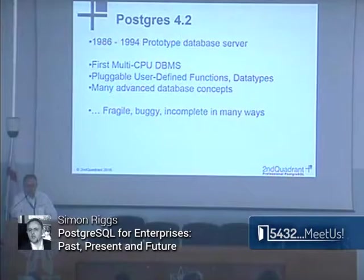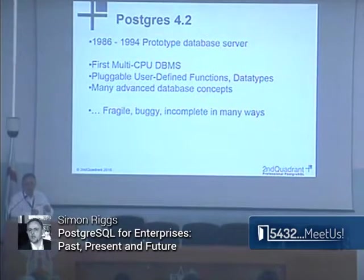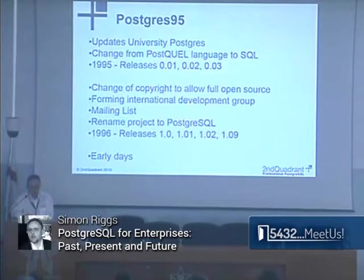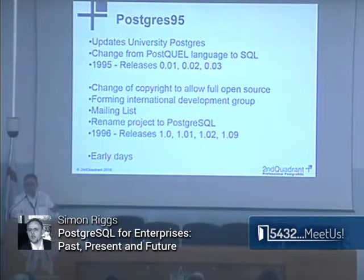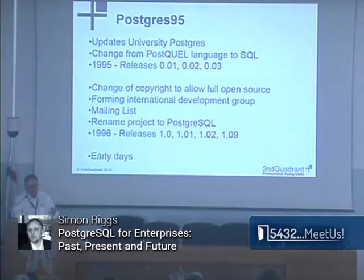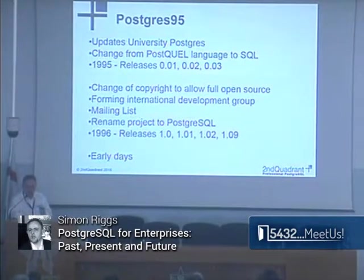It's worth understanding that it was fragile so we can understand what we've done as an open source community to change that. Postgres 95 is where a different group of developers took over from the university team. For about a year, a couple of developers worked on Postgres 95, and one of the major things they did was change the database language from something called PostQL — similar to the Ingres language — over to SQL. They released some code and did some useful things, but then they stopped.